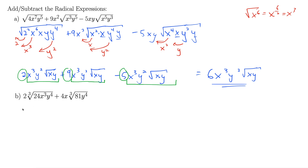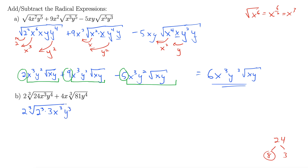Let's rewrite the first term. Looking closely at 24: that's 8 times 3, and 8 is our perfect cube — 8 is 2 cubed. So we can write this as cube root of 2 cubed times 3. The x cubed is ready to go. And for y to the 4th, I'm going to peel off a single y to give us y cubed times y, so the y cubed can break out of the radical.